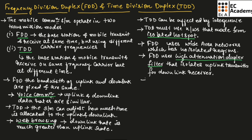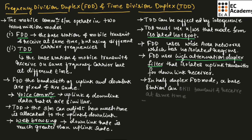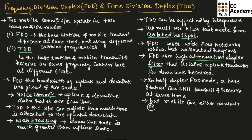In half duplex FDD mode, a base station can still transmit and receive information at the same time, but a mobile can either transmit or receive information at a time — not both simultaneously.